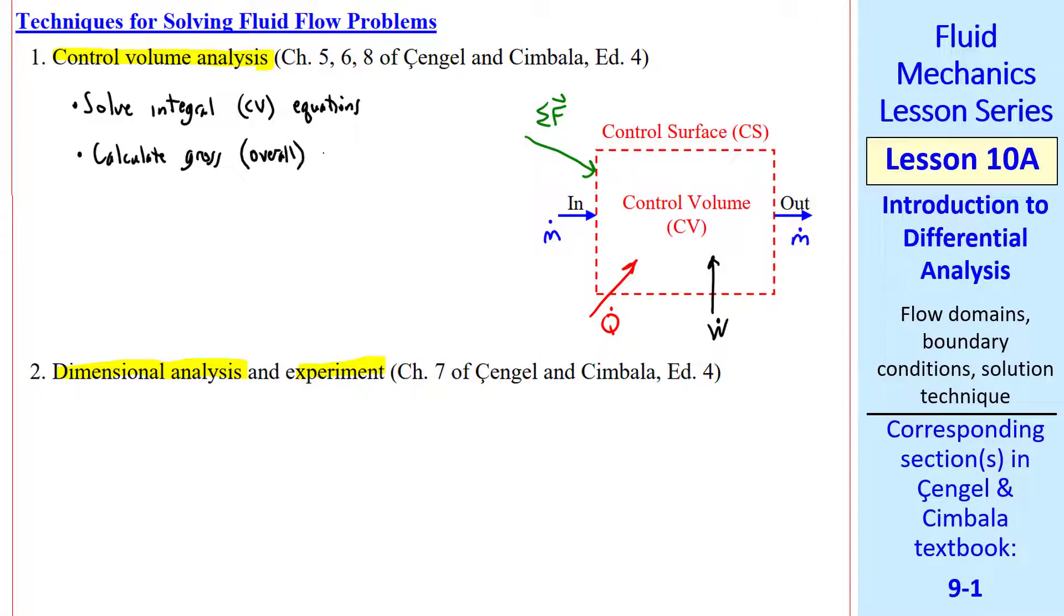We calculate gross or overall properties, for example, total force, total power out, total heat transfer, etc. In a control volume analysis, we don't care about details inside the control volume. In fact, we treat the control volume as a black box, where we don't really need to know what's going on inside the control volume. Rather, we care about what's going on at these boundaries.